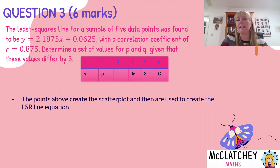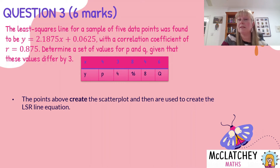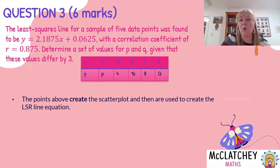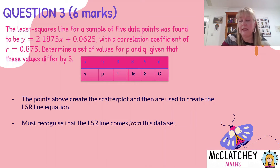One of the key things you really need to understand is that the data points create the scatter plot, and then the scatter plot creates the least squares regression line equation. The equation doesn't come first — it's data points first, draw your scatter plot, then come up with the equation. We've been given the information at the back end; we need to find the information that was used at the very beginning. A key misunderstanding many people had was thinking you substitute points into the equation to get the data set.